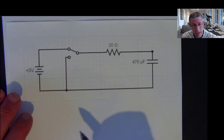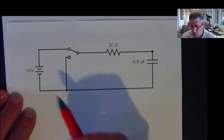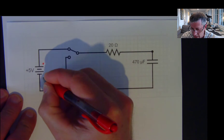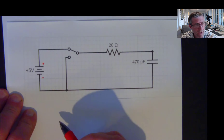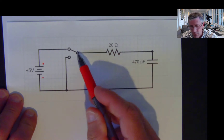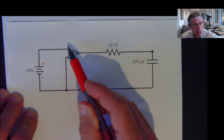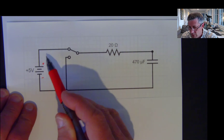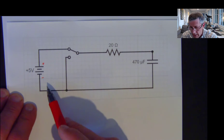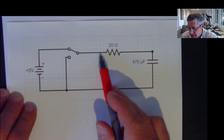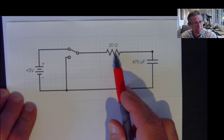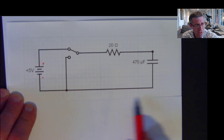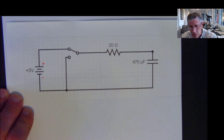So here we have an RC circuit. Notice I have my battery — this is my positive side of the battery, my negative side of the battery. And I have a switch here. The switch can be in two positions. Right now the switch is in the up position, and this connects my battery to my resistor and my capacitor and return charge.